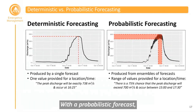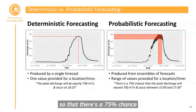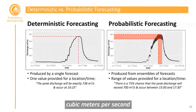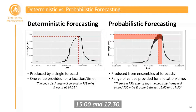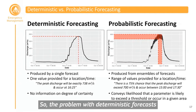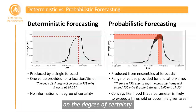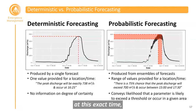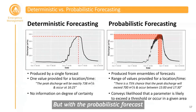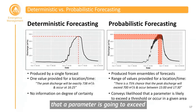With a probabilistic forecast, we get a range of values for a location in time — for example, there is a 75% chance that the peak discharge will exceed 700 cubic meters per second and occur sometime between 15:00 and 17:30. The problem with deterministic forecasts is that they don't provide any information on the degree of certainty. With the probabilistic forecast, being likelihood-based, it shows the likelihood that a parameter will exceed a threshold or occur in a given area.